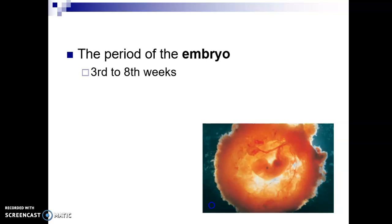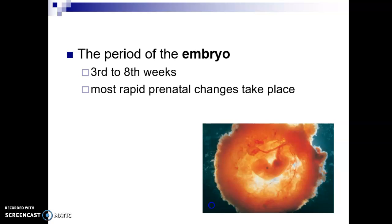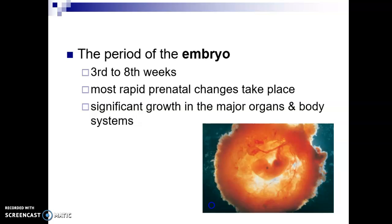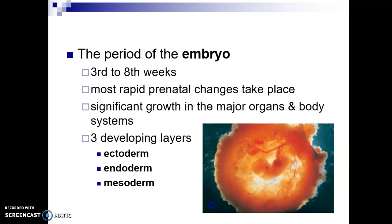The period of the embryo is the next period, covering the third to the eighth weeks. This is when most of the changes take place — the most rapid prenatal changes are occurring. There is significant growth in the organs and body systems, and the embryo is developing three layers: the ectoderm, the endoderm, and the mesoderm.